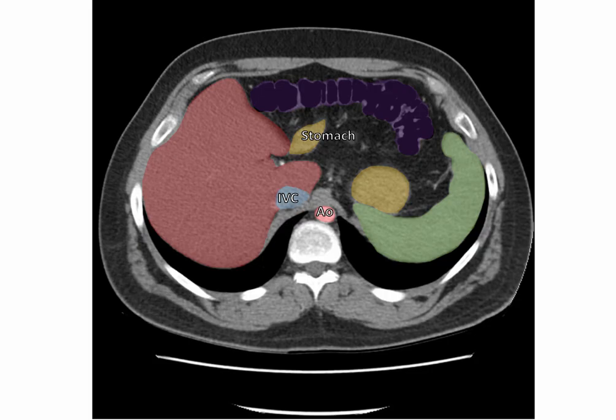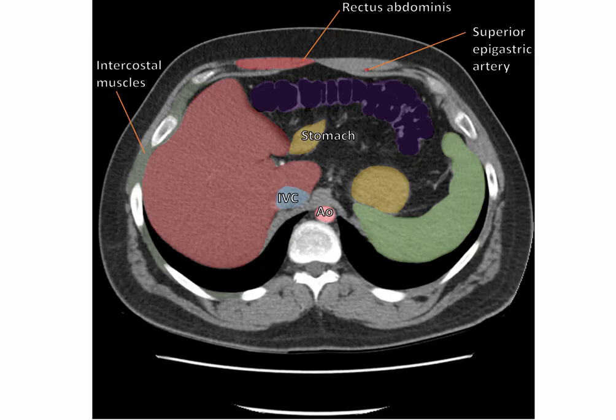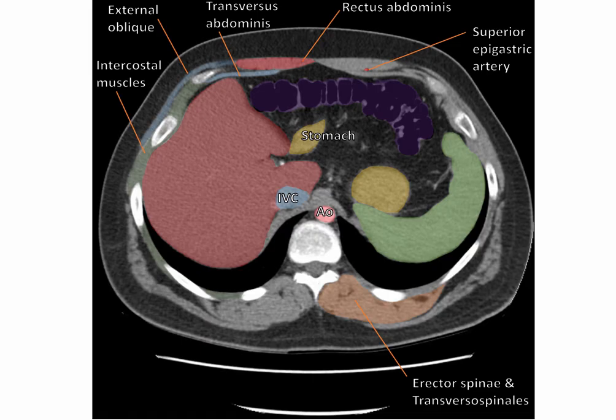We can also identify muscles in the thoracic wall. Here are the rectus abdominis muscles, with their underlying superior epigastric vessels. Here are the intercostal muscles. We can also start to see some of the superior aspects of the external oblique and the transverse abdominis muscles. Posteriorly, we can see the erector spinae and transversospinalis muscle groups. More laterally, we can also see the latissimus dorsi muscle. We can also see the spinal cord traversing the vertebral canal.